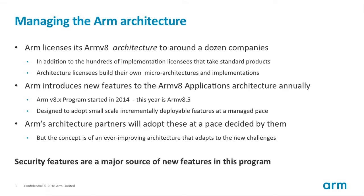What we do to manage the architecture is run an annual process where we put in new features on an annual tick — it's called the ARMv8.x program. It started in 2014; this year, 2018, we're doing ARMv8.5. It's designed to bring in small-scale, incrementally deployable features at a managed pace. We did this partly because, as we go into wider markets, we need to adapt to the needs of those markets.